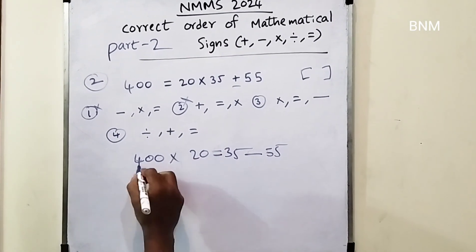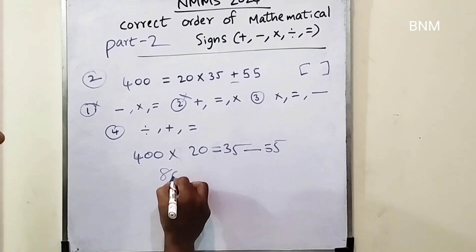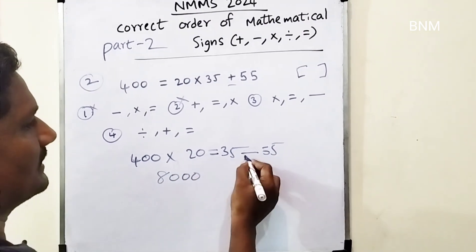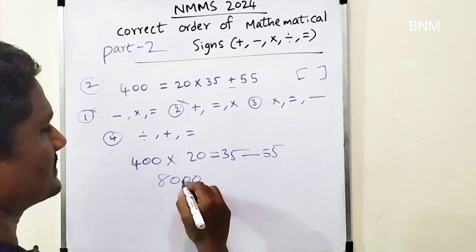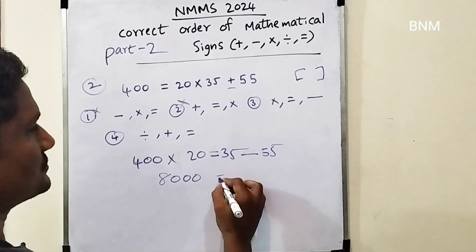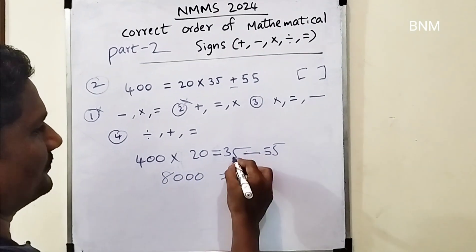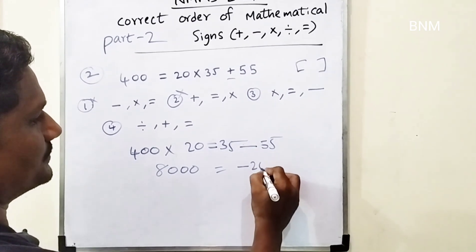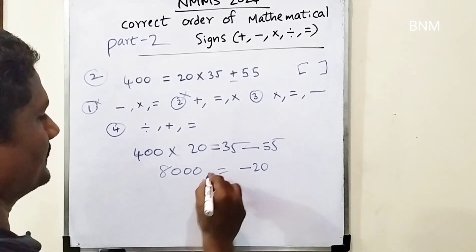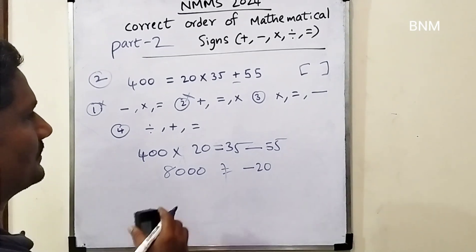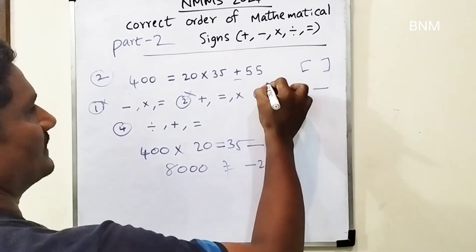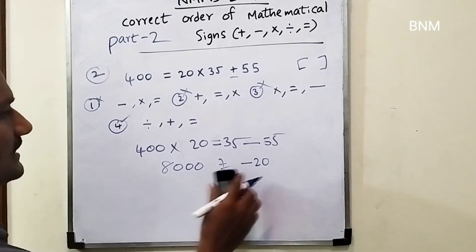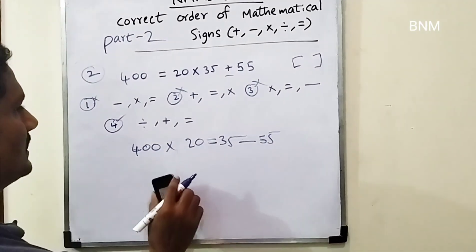The third option: 4 times 2 are 8,000, but this subtraction is the minus 1 value. 55 minus 35 is minus 20. This is not equal. Third one is the right answer, and fourth one is the right answer.